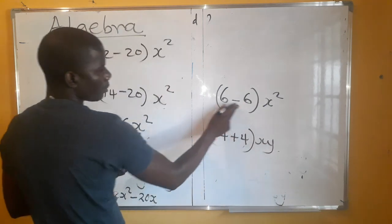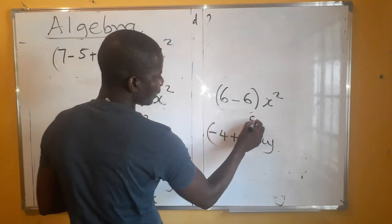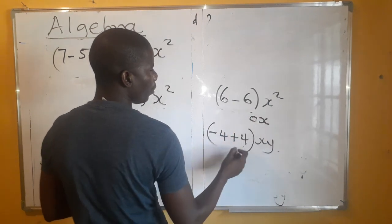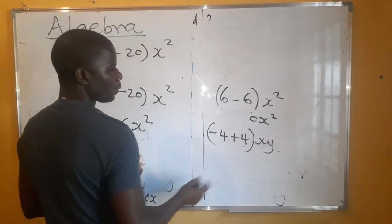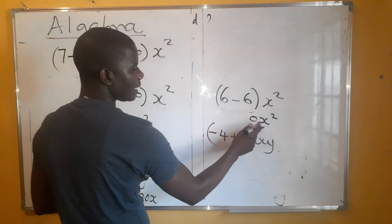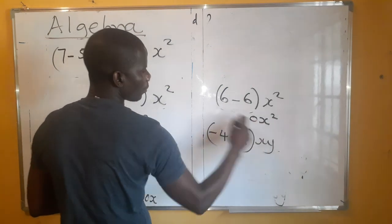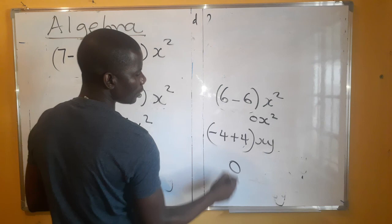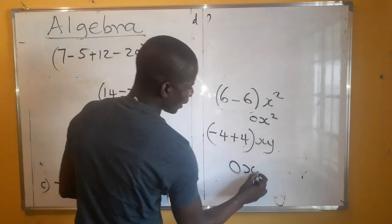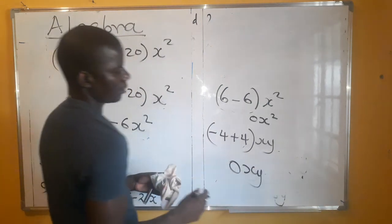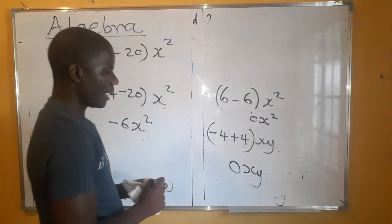In case you have something like 6 minus 6 times x², that is going to give us 0. You know that when you multiply 0 by anything you get 0, so this will just be 0 — not 0x². Similarly, 0xy is just 0. You can't write 0 multiplied by a variable — 0 is just 0.